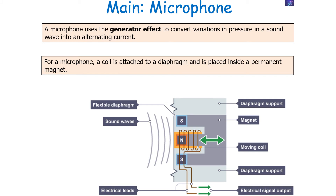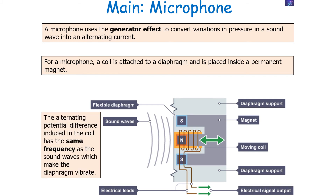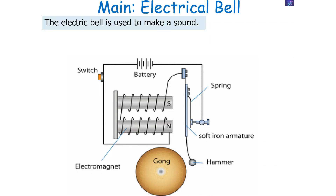The microphone uses the generator effect to convert variations in pressure in a sound wave into an alternating current. For a microphone, the coil is attached to a diaphragm and placed inside a permanent magnet. The alternating potential difference induced in the coil has the same frequency as the sound waves that make the diaphragm vibrate.